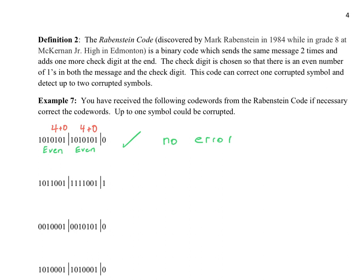Let's check one more. Counting the number of ones in the next one we have four, and adding the check digit — this time you would add one. In the next portion, we count five, plus one for the check digit at the end. So the first category in terms of ones is an odd amount, and the next we have six, so that's an even amount. The even amount is the correct one and the odd amount is the incorrect one. Remember, the sender always sets it up so that you have an even amount of ones together with the message and the check digit. So the message is: one, one, two zeros, and a one.